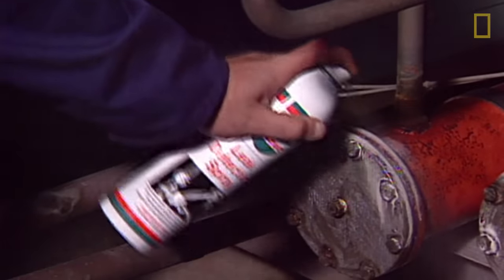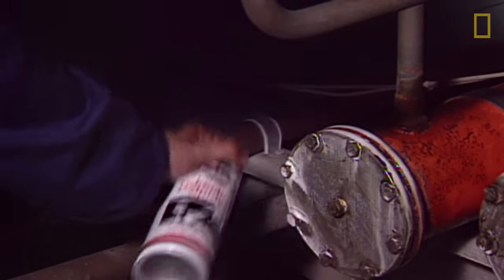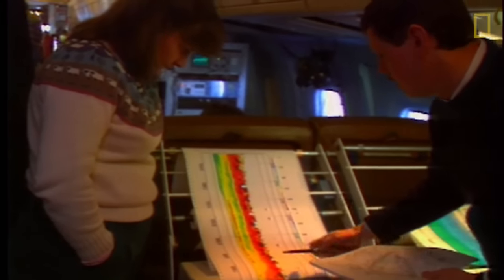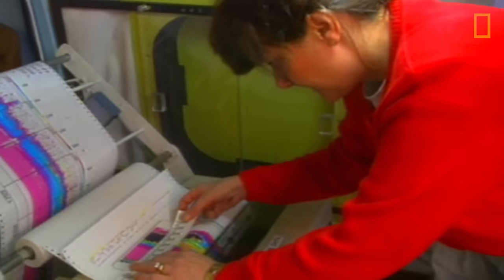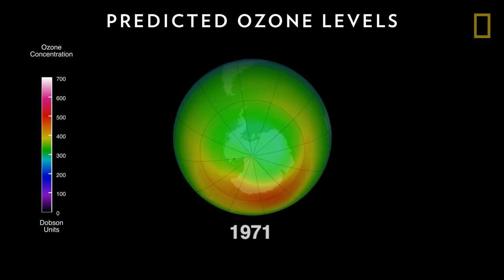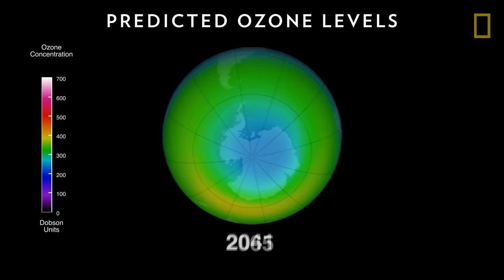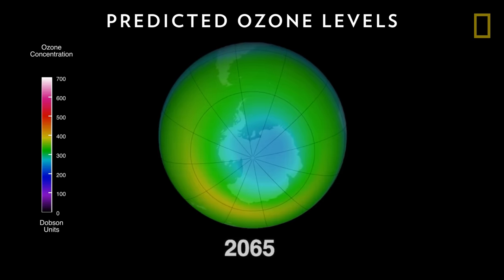Since then, the amount of chlorine and other ozone-depleting elements in the atmosphere have been falling. Scientists estimate that chlorine levels will return to their natural state in about 50 years. By then, the Antarctic ozone hole will shrink to smaller than 8 million square miles.